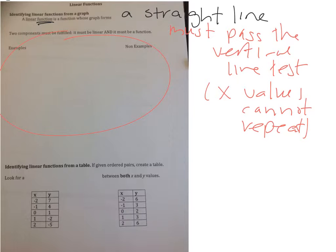When you identify a linear function from a table, if you're given ordered pairs, make a table. What do we have to look for between both the x and y values? It's called a common difference. Take a look at this table here. From negative 2 to negative 1 to 0 to 1 to 2, we're seeing a plus 1, so we have a common difference on that side.